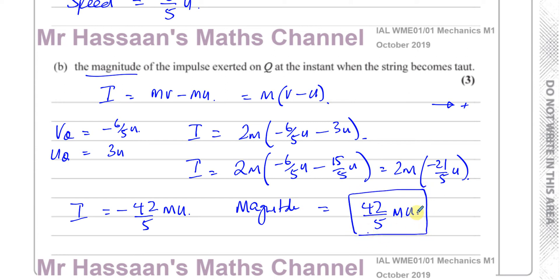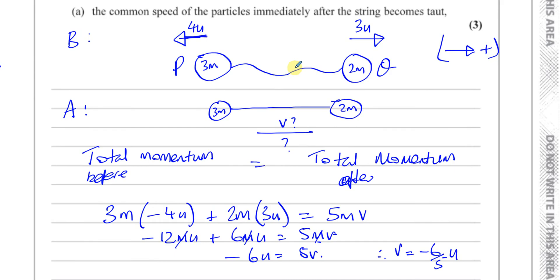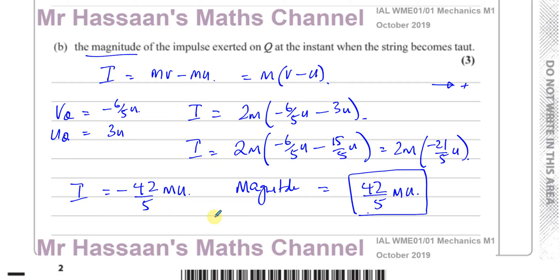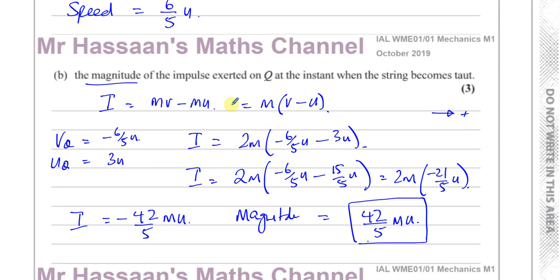That is the magnitude of the impulse exerted on Q at the instant when the string becomes taut. Its direction is going to be opposite to Q's initial motion, because Q is moving one way and ends up moving the other way. So not only does the impulse slow Q down, it makes it change direction as well. The impulse acting on Q is in the direction opposite to its initial movement — that's why it comes out negative. The change in momentum of Q is what caused it to change its speed and direction.